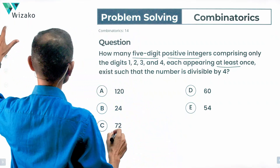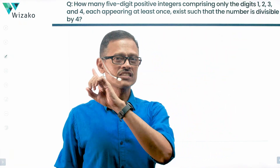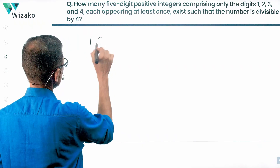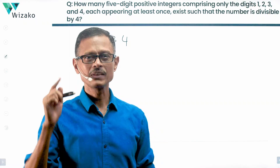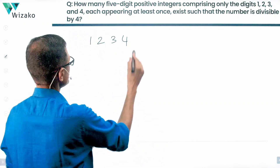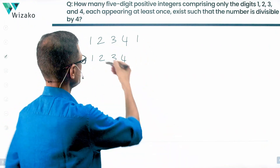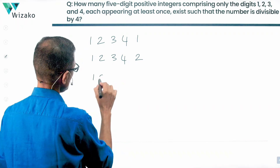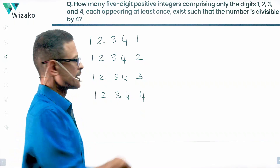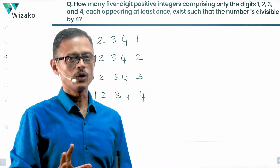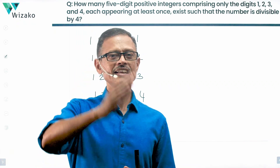Let's get started. These are 5-digit positive integers formed using the digits 1, 2, 3, 4, and each of these digits should appear at least once. So all of these numbers are going to comprise 1, 2, 3, 4 in any order, in all the different reorderings that are possible. The 5th digit — one other digit we are going to use — could be a 1, 2, 3, or 4. There's one more condition to be satisfied, which is the number should be divisible by 4. We'll take that as a second part.